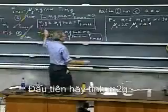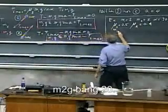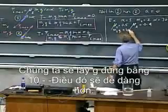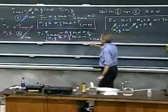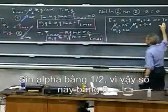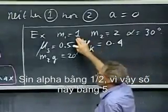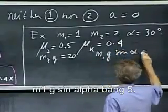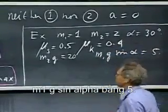Let's first take M2G. M2G equals 20. We'll just take for G 10. That is just easier. M1G sine alpha... The sine of alpha is a half, so that is five. M1G sine alpha equals five.